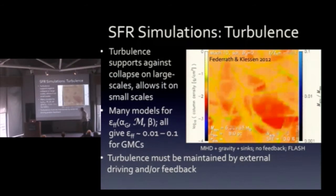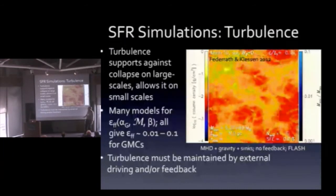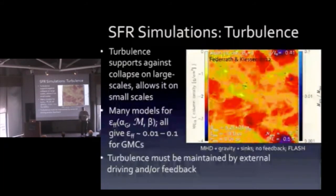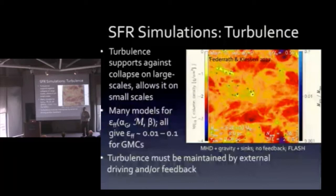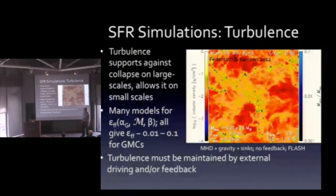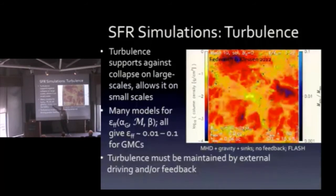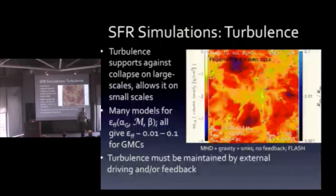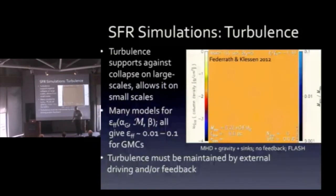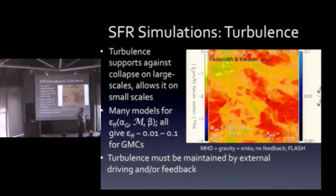One possibility is that the key physics is turbulence. This numerical experiment by Christoph Federrath uses just MHD plus gravity plus sink particles, stirring turbulence at large scales and measuring the star formation rate. They find a value of ε_ff — star formation rate per free-fall time — not quite one percent, probably still too high compared to observations, but getting into the right region. Of course this doesn't explain where the turbulence comes from; that's almost certainly the feedback. But this suggests turbulence is at least part of the answer.